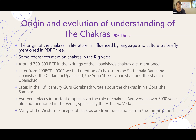Chakras were first mentioned in the Rig Veda. The Rig Veda is one of four Vedas, and one of the oldest surviving written books in history. We also see around 700 or 800 BCE, in the Upanishads, mentions of chakras. The Upanishads came after the Vedas.